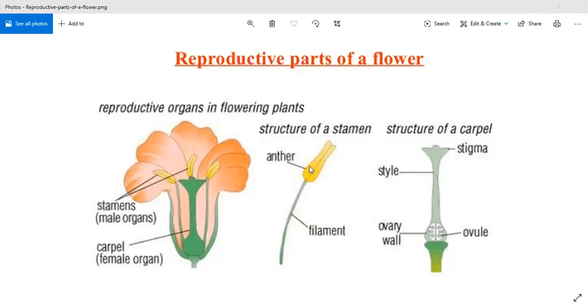The anther is a tetrasporangiate structure, meaning it is a four-sided structure consisting of four microsporangia, two in each lobe. Microsporangia develop further and get transformed into pollen sacs.